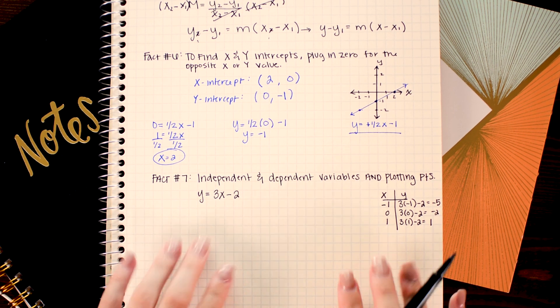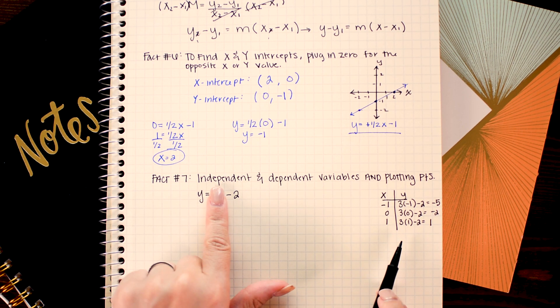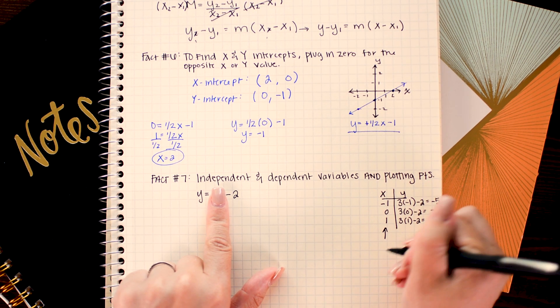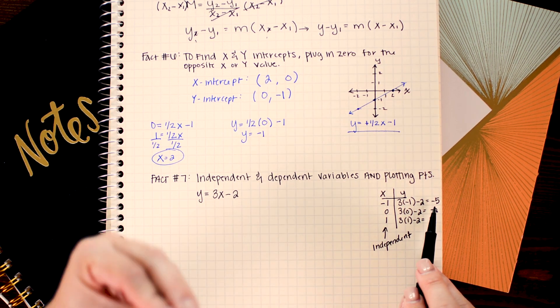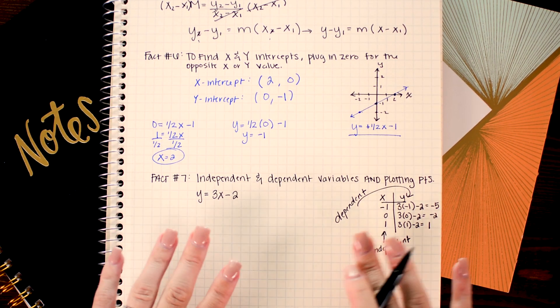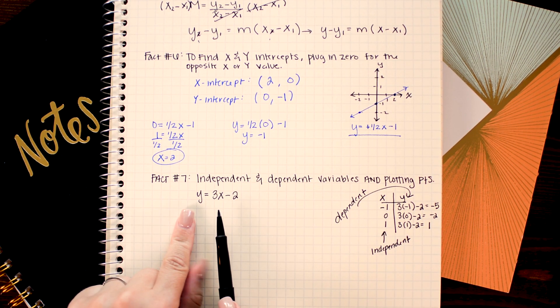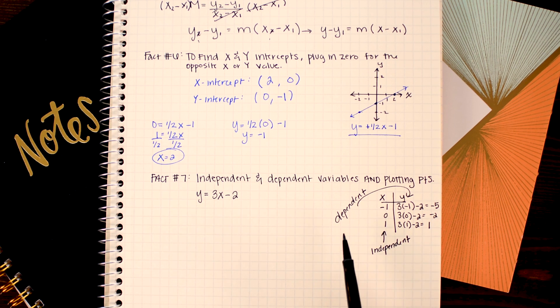Now this will also help you understand which is the independent and dependent variable because the independent variable is always the variable you choose first when plotting points. So the x variable in this case is the independent and the value that we got as the output is the dependent variable. Sometimes books will try to trick you by using different letters than x and y in their linear equations. So thinking about how you would plot points is a really good way to help you keep it straight which is the independent and dependent variables.